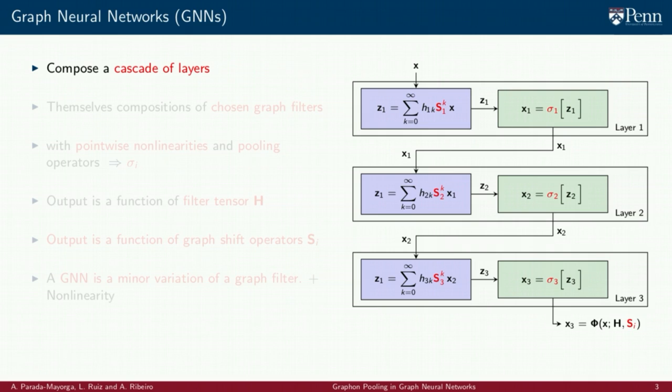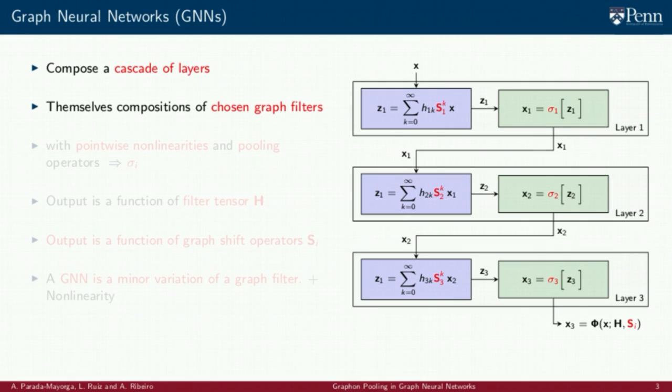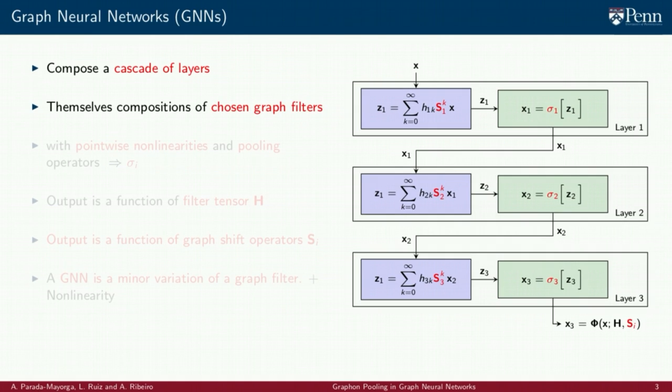Graph neural networks are layer structures, where in each layer signals and information is processed or filtered as graph signals. The information is mapped between layers by means of a map sigma which performs the operations of non-linearity and pooling. The output of a GNN is a function of the coefficient h sub k of the filters used in each layer, which in total can be represented by a tensor capital H.